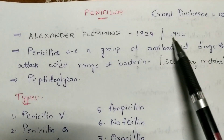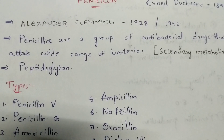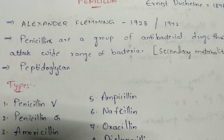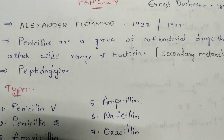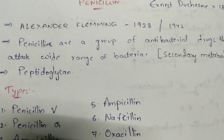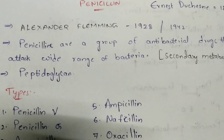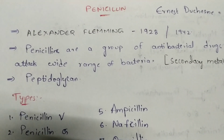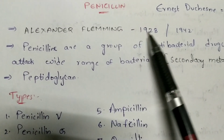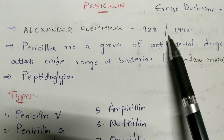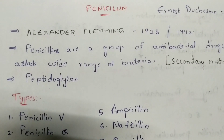In 1942, penicillin became totally available in the market, where each and every person started using penicillin to clear their infections, based upon the appropriate type of penicillin.